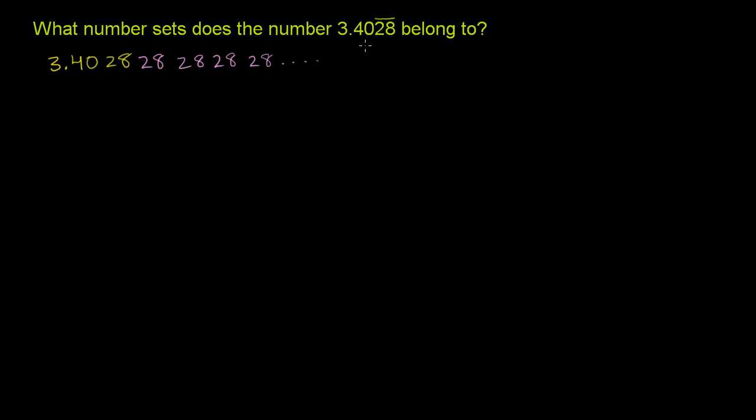Now let's think about what number sets it belongs to. The broadest number set we've dealt with so far is the real numbers, and this definitely belongs to the real numbers. The real numbers is essentially the entire number line that we're used to using. And 3.4028 repeating sits someplace over here. If this is negative 1, this is 0, 1, 2, 3, 4. 3.4028 is a little bit more than 3.4, a little bit less than 3.41. It would sit right over there. So it definitely sits on the number line. It's a real number.